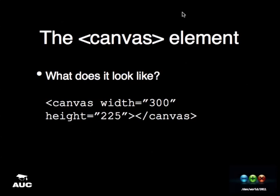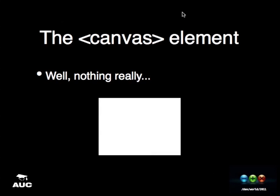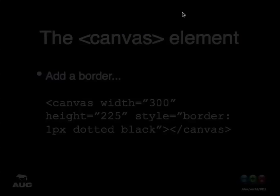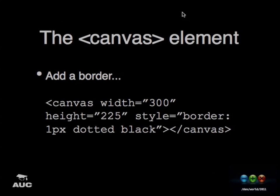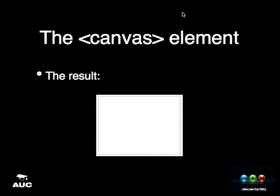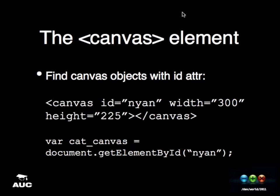The usual syntax is we define a Canvas element and give it attributes such as a width and a height. If you put this in your browser, you'd just get an empty space. We can use some CSS styling to quickly add a border to it and you'll get a rectangle with a dotted line. If we specify an ID for this element, we can find it in our document object model. I've got one called 'nyan', so in JavaScript I say catCanvas is document.getElementById('nyan').